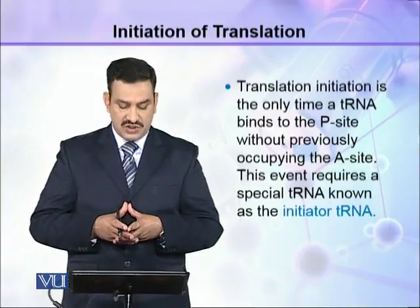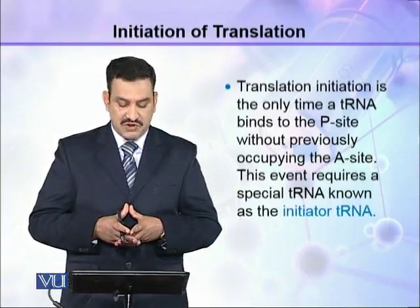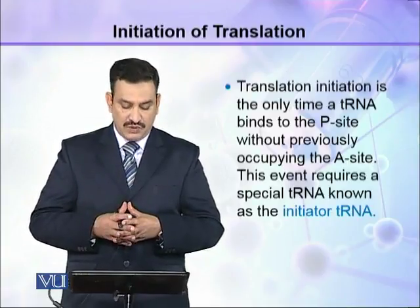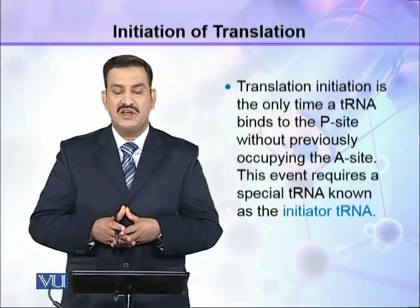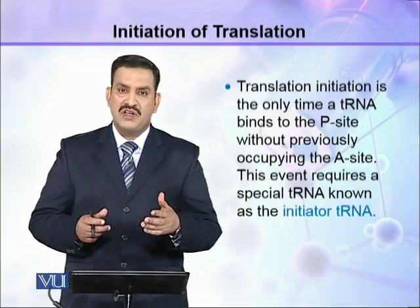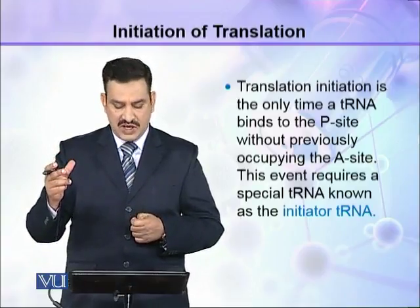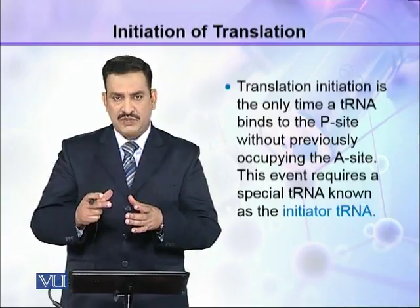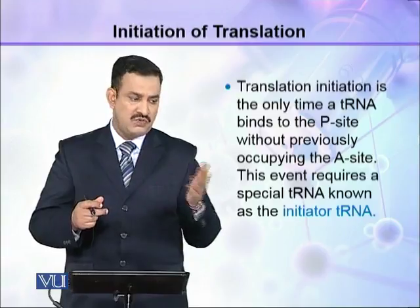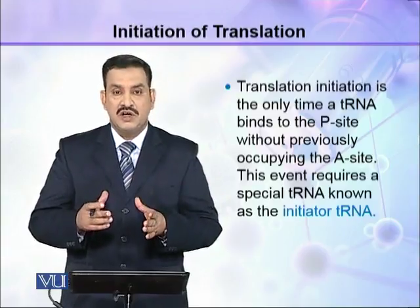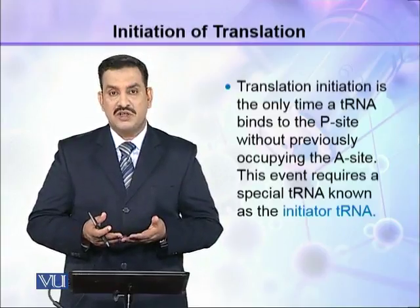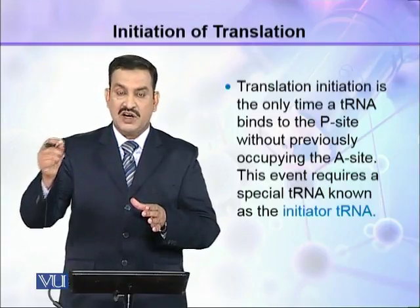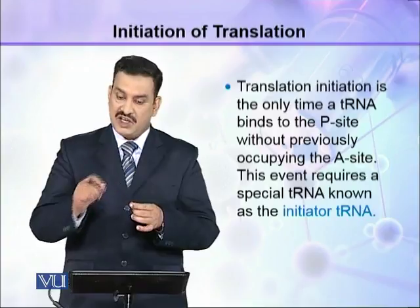Translation initiation is the only time a tRNA binds to the P site without previously occupying the A site. Normally, tRNA first goes to the A site, then to the P site, then to the E site. But during translation initiation, the tRNA goes directly to the P site.